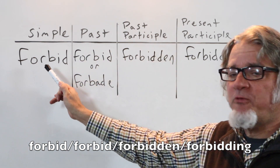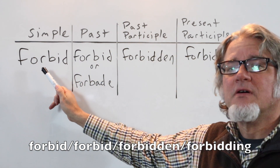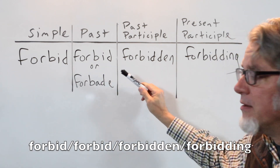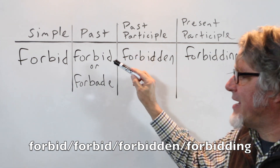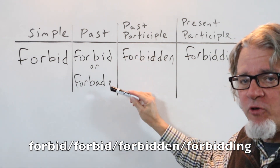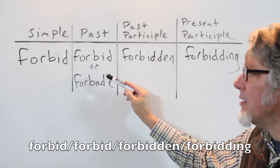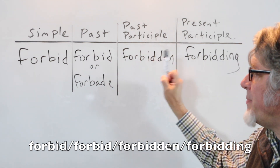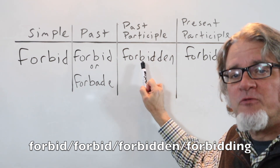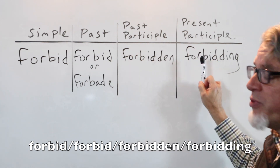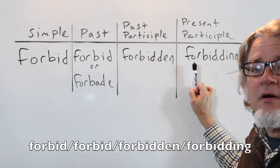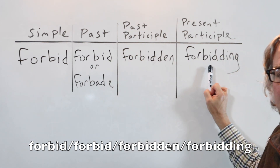The simple form is forbid. The past tense is forbid or forbade. The past participle is forbidden. The present participle is forbidding.